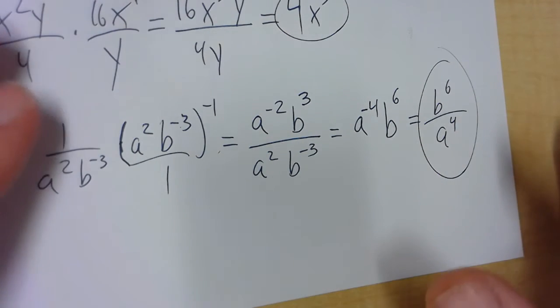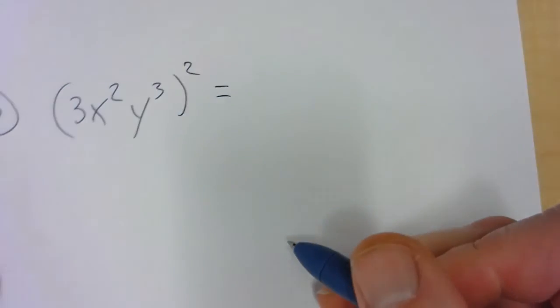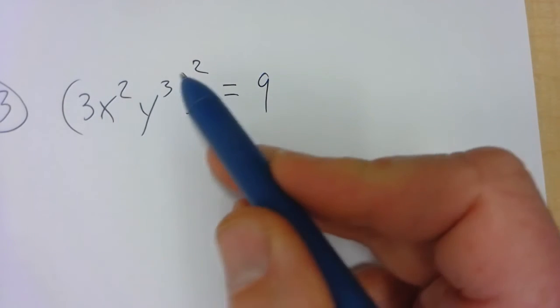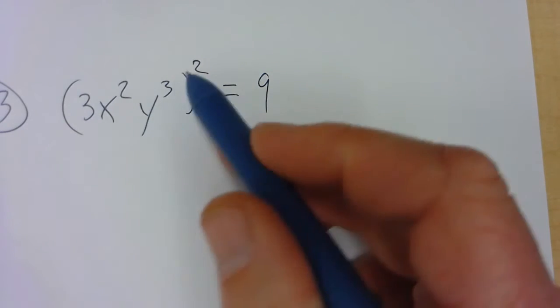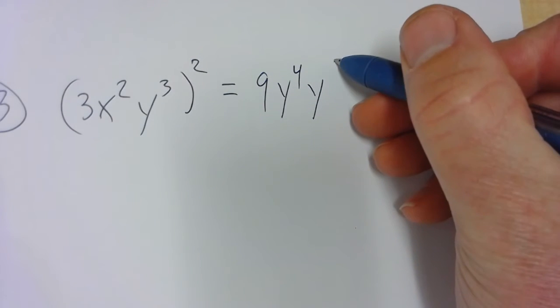Now we're going to go to the top of the next column, the last column, which is question number 3. So it's 3x squared y cubed, all squared. Everything gets squared — I square the 3: 3 times 3. And then an exponent raised to an exponent, we multiply: 2 times 2. And then y to the 6th.